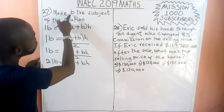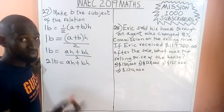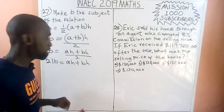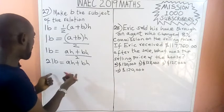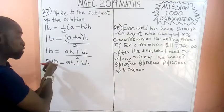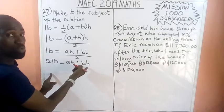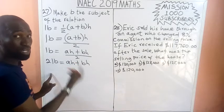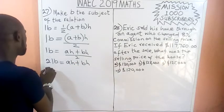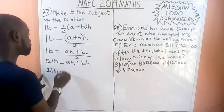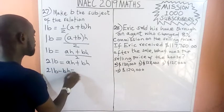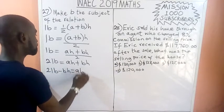We are asked to make b the subject, meaning b must stand alone. So I bring together the terms containing b. We have 2lb and bh on one side, and we collect like terms. So we have 2lb minus bh equals ah.